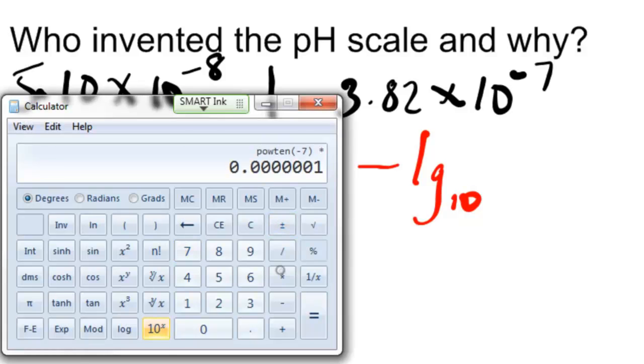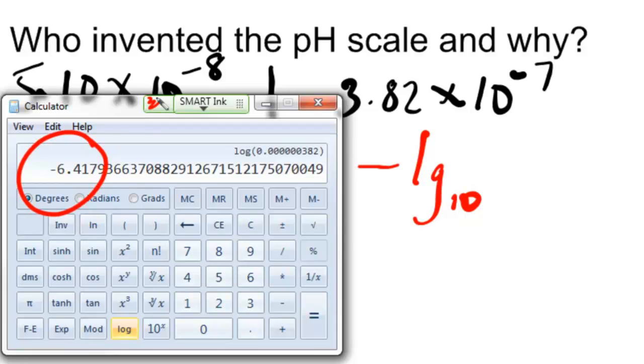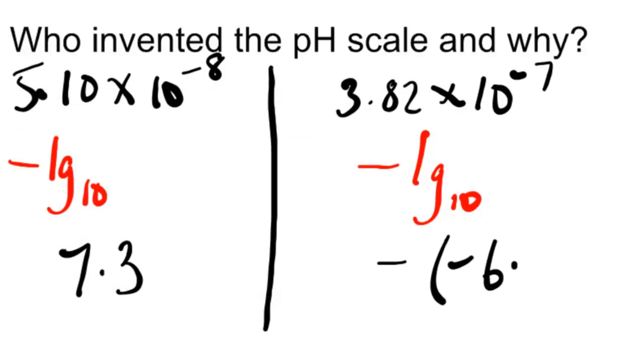Look at this other number, 3.82 by 10 to the minus 7. If you take its negative log, it comes out to be minus minus 6.4, so 6.4.